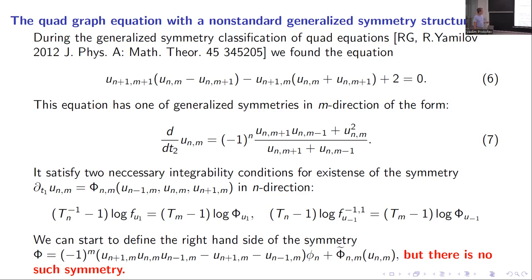And if we look for a symmetry in the n-direction, then we see that the true density and the integrability condition is satisfied, so we can start to find this symmetry in this volume. But we cannot find this symmetry, because it does not exist.